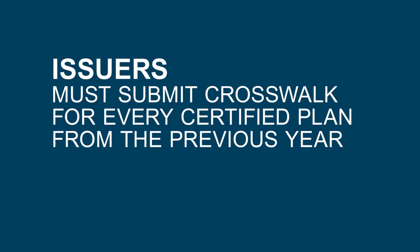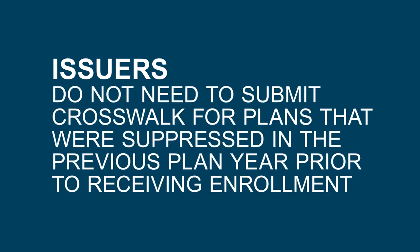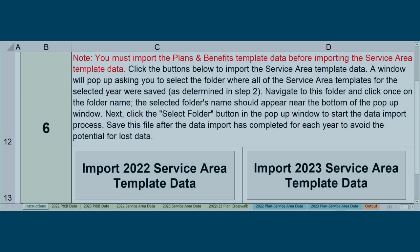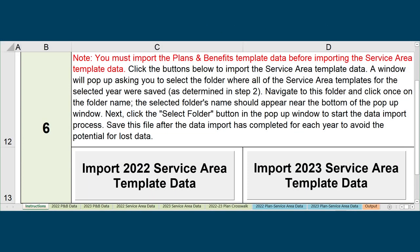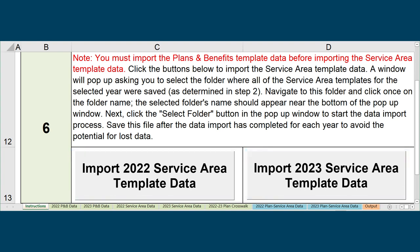Issuers are expected to submit a crosswalk for every plan that was certified in the previous plan year. Issuers do not need to submit a crosswalk for plans that were suppressed in the previous plan year prior to receiving enrollment. Once column L is completed in both tabs containing plans and benefits data, return to the Instructions tab and proceed to Step 6 to import both the previous and current plan year service area template data into the tool, using the same method you used for importing plans and benefits template data.